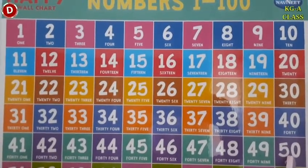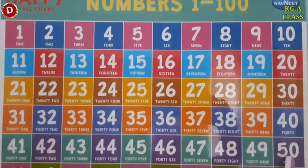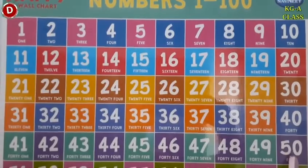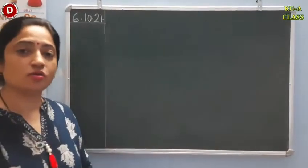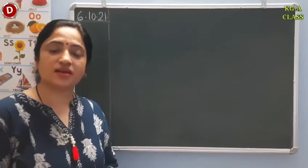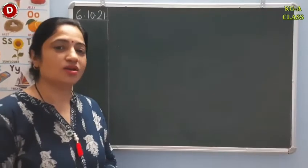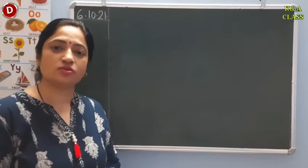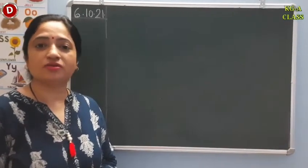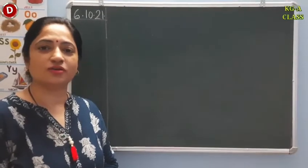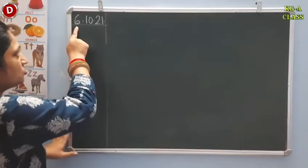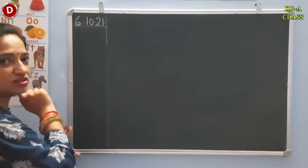So children, you have to learn number counting 1 to 50 and recognize the numbers the way I taught you. You already know number counting 1 to 40, you can recognize and write those numbers. Today we will proceed further — I will introduce you to numbers from 41 to 50. So look at the board. Today's date is 6th October 2021.